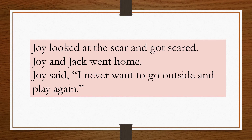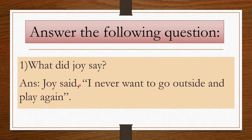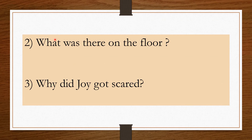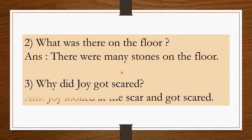Now let's see some questions and answers from our story. First question: What did Joy say? Answer: Joy said, 'I never want to go outside and play again.' Second question: What was there on the floor? Answer: There were many stones on the floor. Third question: What did Joy do when she saw the scar? Answer: Joy looked at the scar and got scared. I hope everyone got the answers correct.